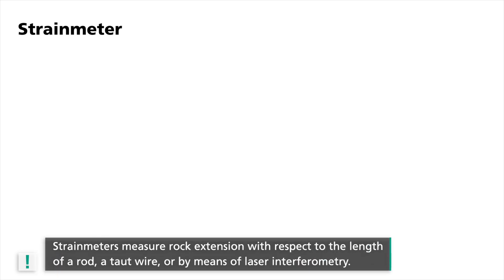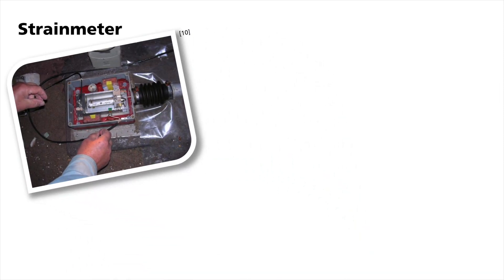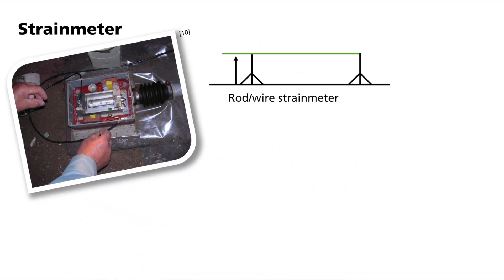Strain meters typically measure rock extension with respect to the length of a rod, a taut wire, or by means of laser interferometry. Rod and wire strain meters have dimensions of up to several meters. They can use an electronic transducer that measures the movement when the two endpoints of the instrument are displaced with respect to each other. The rod or wire must not change in length and transfers the motion from one endpoint to the other. A measurement of such a system at BFO can be seen here.